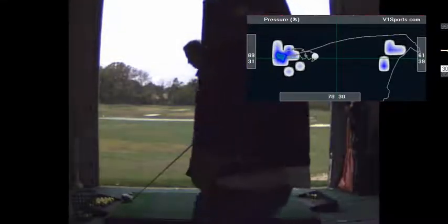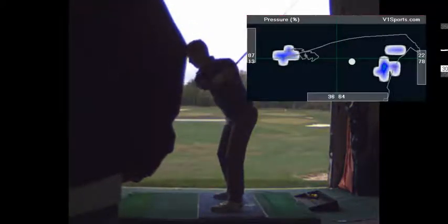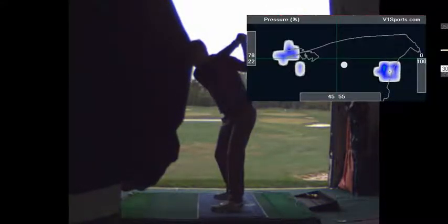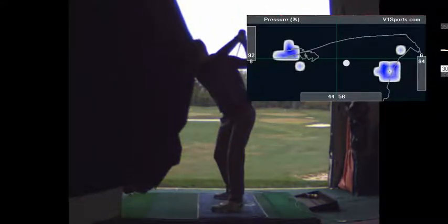At setup you do have more weight on your front leg. As you take a backswing, your hands are much lower, but again this is pretty good. We know that's your heel. We also know 94% on your heels, that's a good thing.